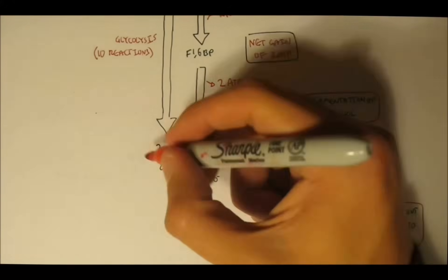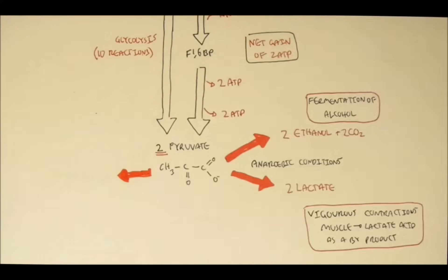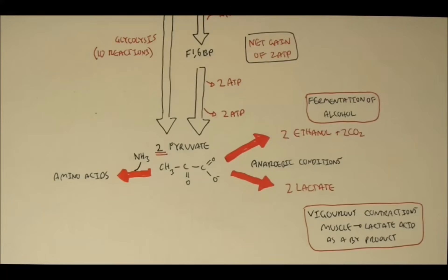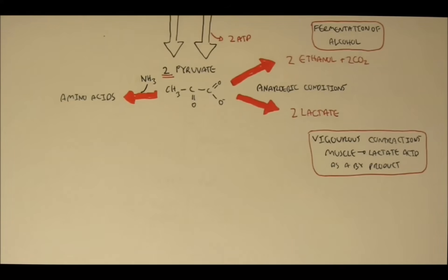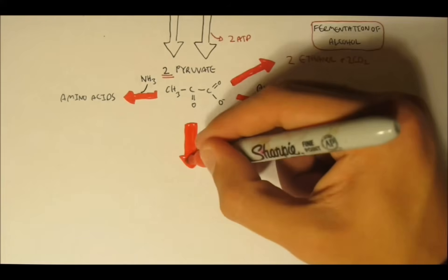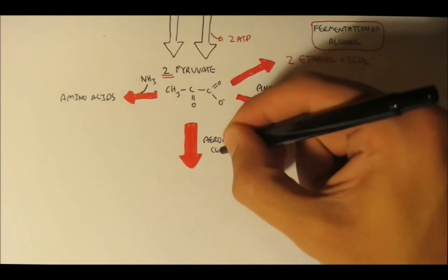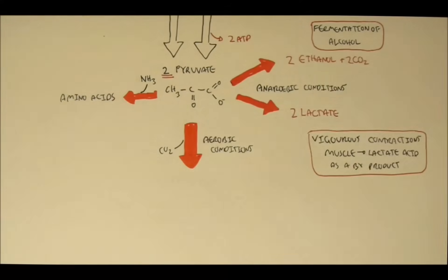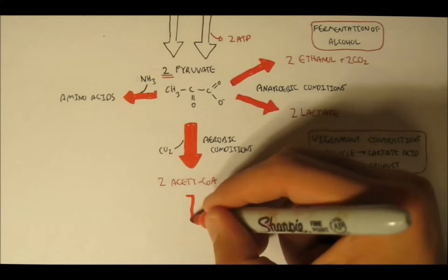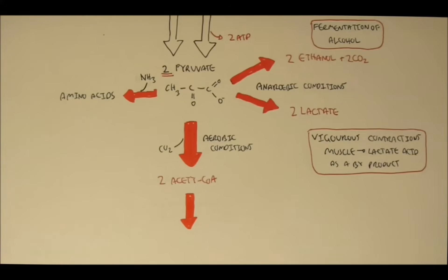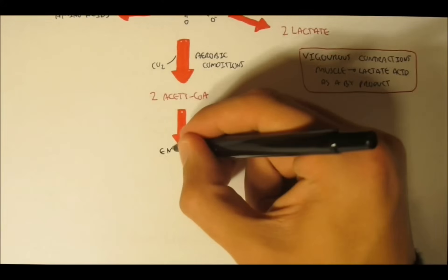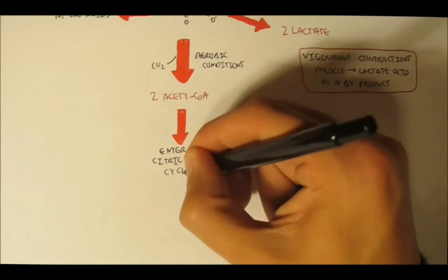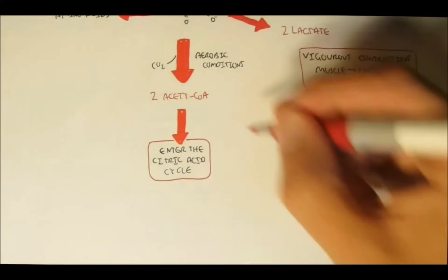Alternatively, the 2 pyruvates can become amino acids, such as alanine, which has a very similar structure to pyruvate. But mostly, in a metabolic environment, during aerobic conditions with oxygen, when the body needs more energy, pyruvate will enter the mitochondria and convert to acetyl-CoA. Now, acetyl-CoA can then enter the citric acid cycle, also known as the Krebs cycle, to synthesize more ATP.